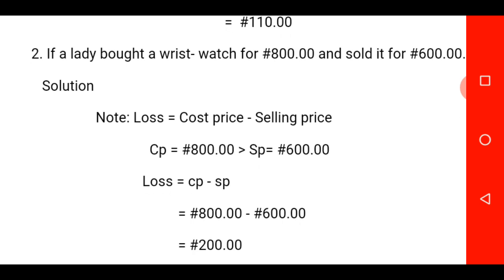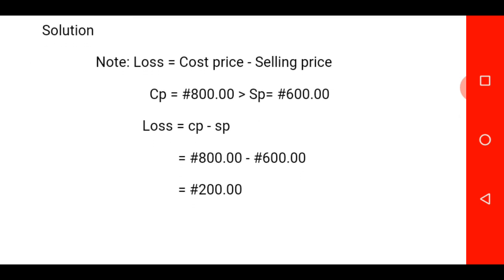You will now apply the formula. Loss is equal to CP minus SP. From the question, our cost price is 800 naira minus 600 naira, and you are going to get 200 naira. I hope it is clear to you. May Almighty Allah continue to be with us and enrich us in knowledge. My regards to your parents. Assalamualaikum warahmatullahi wabarakatuh.